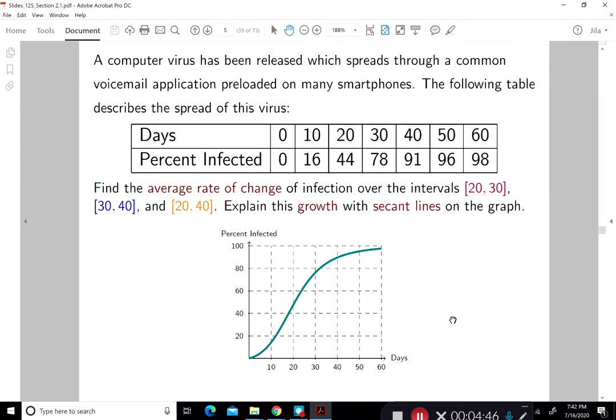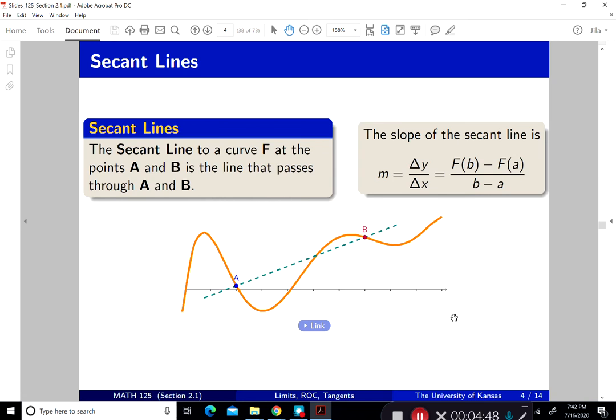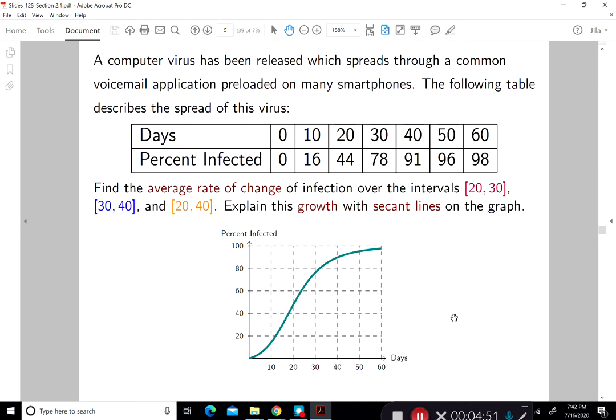So let's do an example. A computer virus has been released, which spreads through a common voicemail application preloaded on many smartphones. The following table describes the spread of this virus. And so days in one row is days, day 0, 10, 20, 30, 40, 50, and 60.